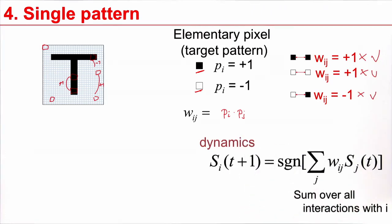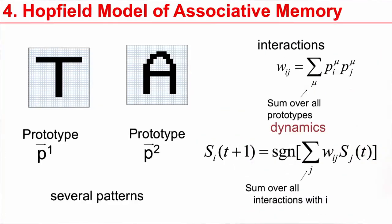This is the case for one pattern. But now the question is, what happens if we have several patterns? A memory that always goes to the same memory content is not a useful memory. I want to show a noisy input and find the closest prototype. I can talk about a memory model only if I have several prototypes. Here, prototype p1 could be a T, p2 could be an A.